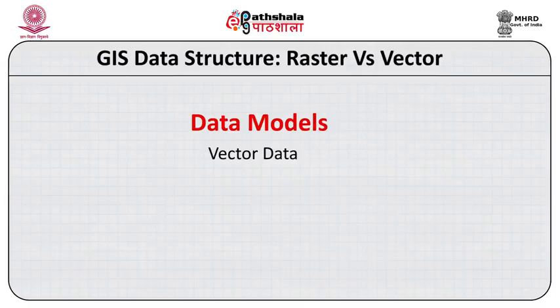If we look at the different data structures of vector data, broadly speaking there are two types of vector data models. One is the spaghetti model, and the second is the topological data model. In the topological data model, features connect with one another — for example, arc-node, where connecting one node with another gives an arc. I will be showing these models through diagrams that will give you a better understanding of spaghetti and topological data models.